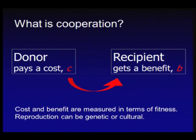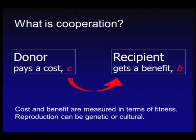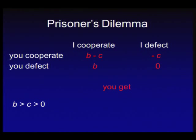This is a good working definition for the purpose of this talk. Cost and benefit can be measured in terms of fitness, and reproduction can be genetic or cultural. This interaction gives rise to a game in the sense of game theory of John von Neumann, who invented game theory working together with Oskar Morgenstern. This is a payoff matrix — and this particular game, not studied by John von Neumann, is the prisoner's dilemma.